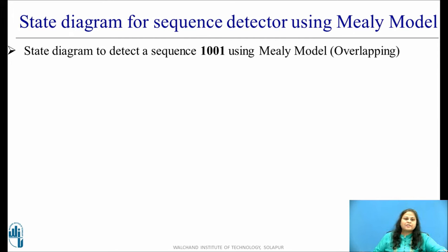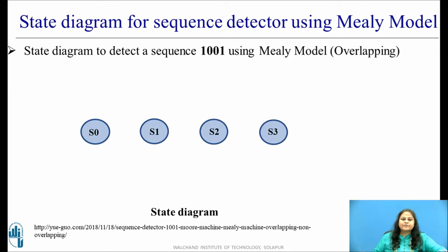Let us now draw the state diagram for a sequence detector using a Mealy model. Consider an example to detect the sequence 1001 for Mealy model and overlapping type. As discussed, the number of states required to draw the state diagram is 4, since the number of bits in the sequence is 4. So let us consider these 4 states S0 to S3.